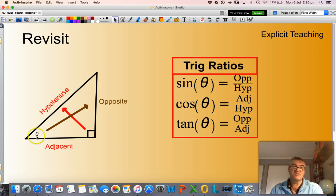Opposite, the side that is across from my reference angle. And adjacent, the side that's between my reference angle and my right angle.